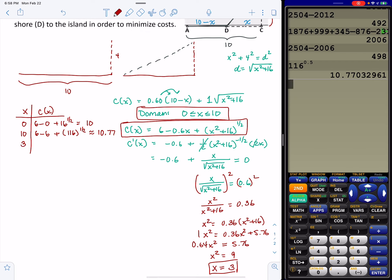So then along comes the 3. So we have 6 minus 0.6 times 3, plus 3 squared is 9, plus 16 is 25 to the 1 half. So 6 minus 0.6 times 3 is 4.2. 25 to the 1 half is 5. So this is 9.2. And would you look at that? There's where our minimum occurs.